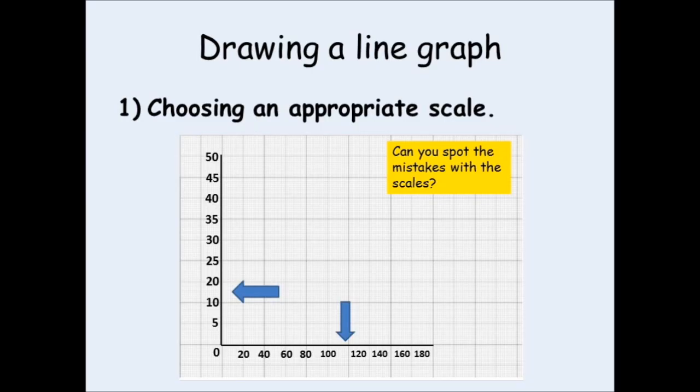Whereas one square has been worth 20 up until that point, it is a square and a half going from 100 to 120. Again, that means that that square is not worth the same as the other squares on that axis. Again, this small mistake would cost you your mark for the x-axis.